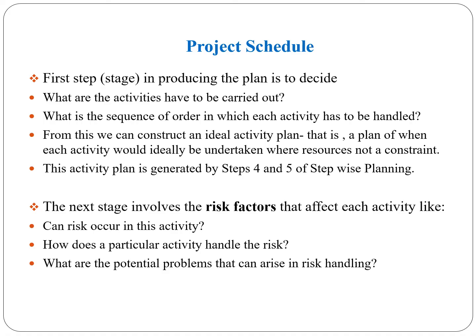The first step is producing the plan. What are the various steps under producing the plan? First, what activities have to be carried out? Then, what is the order to be followed — that is, the sequence in which each activity has to be handled. From this, we can construct an ideal activity plan: a plan of when each activity would ideally be undertaken where resources are not a constraint.